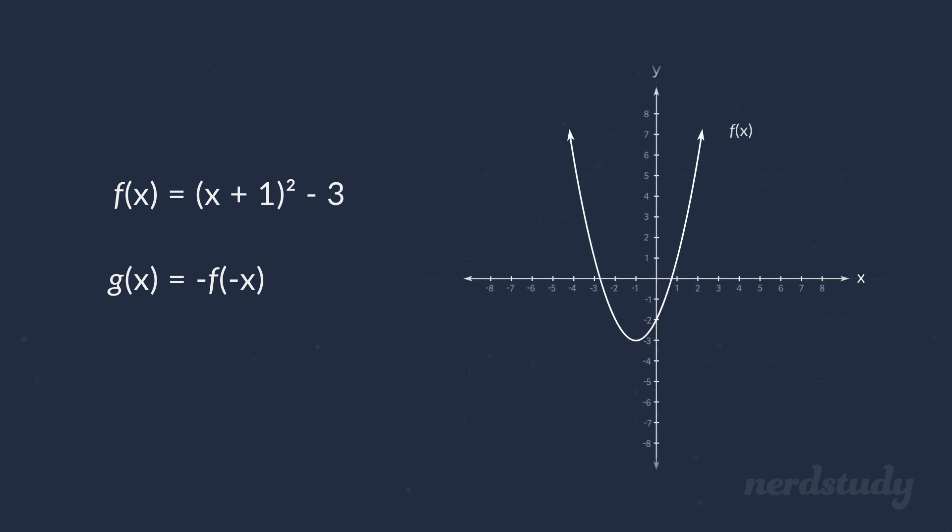Let's take a look at one last function and see if we can identify what the graph will look like after applying some transformations. Here is our f(x), and here is our g(x), which is a function of manipulating f(x). Looking at the graph of f(x), how will the graph of g(x) look after applying these transformations?